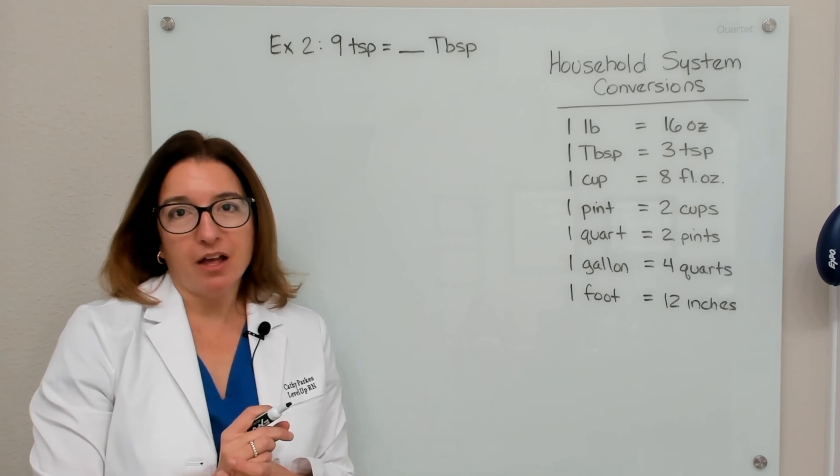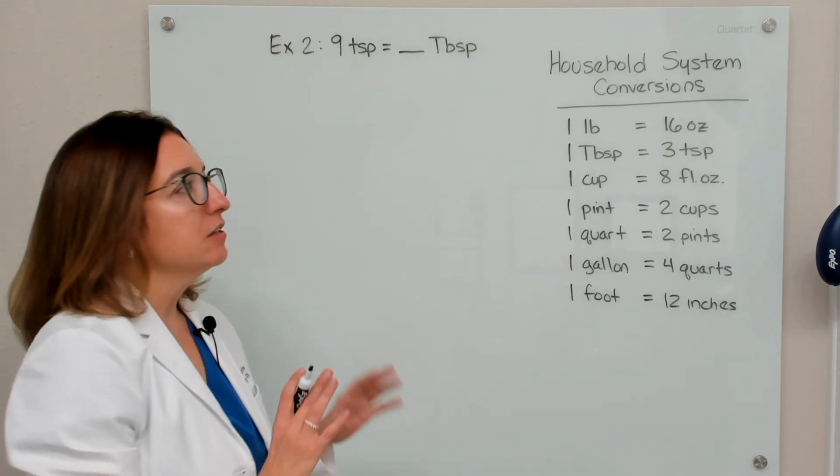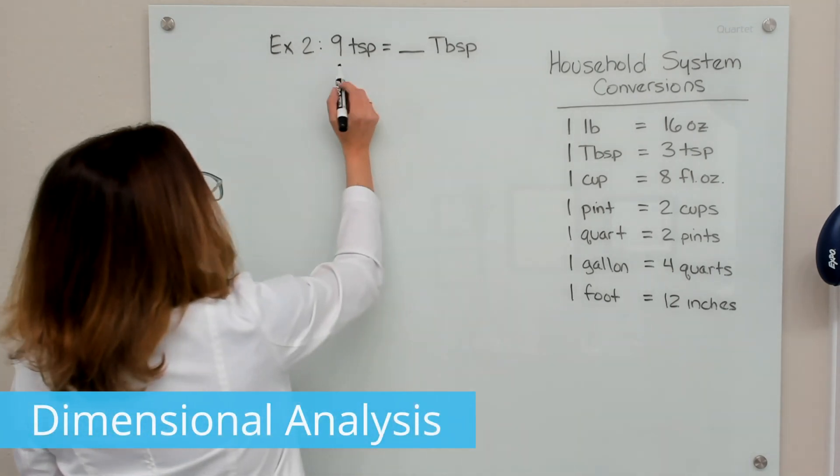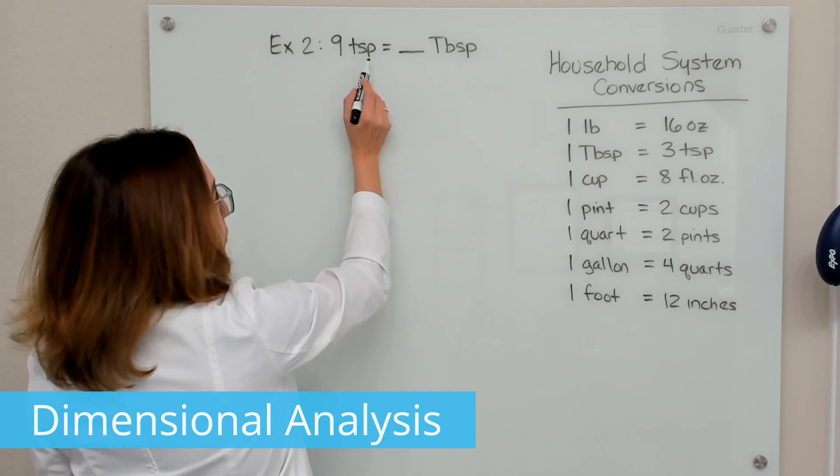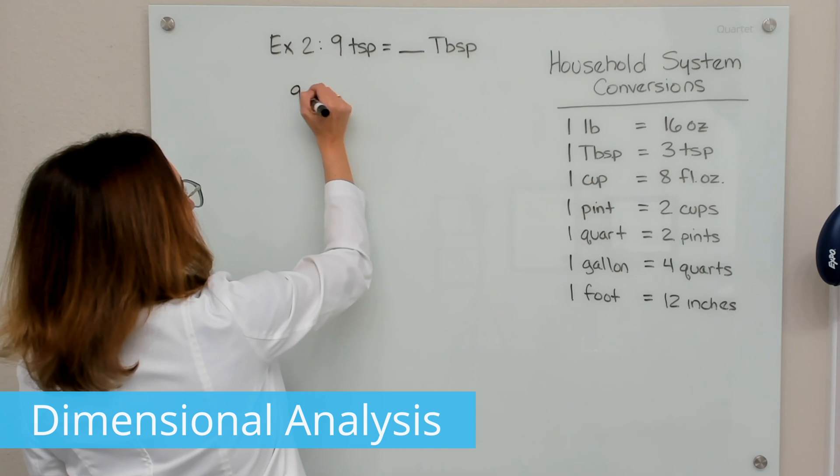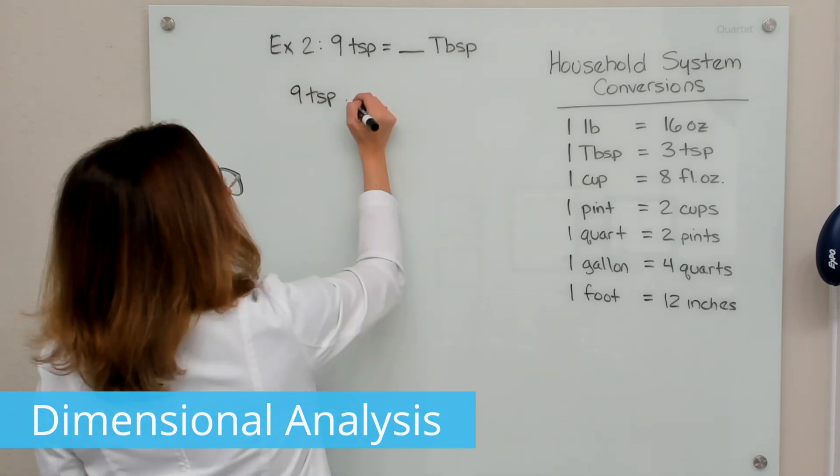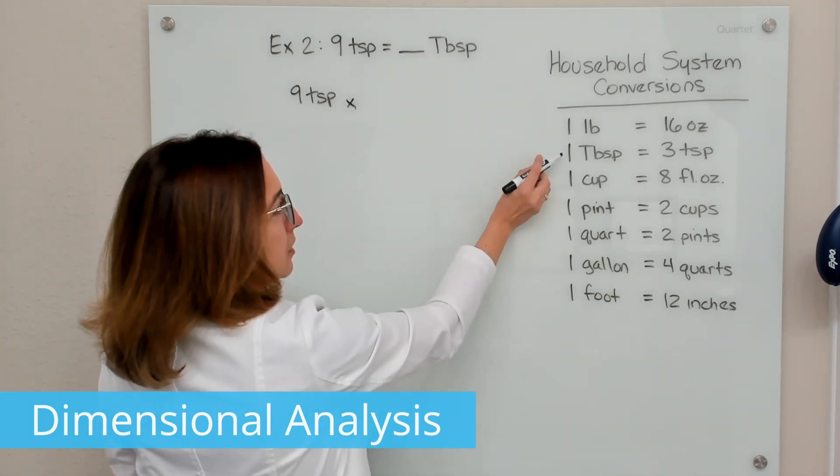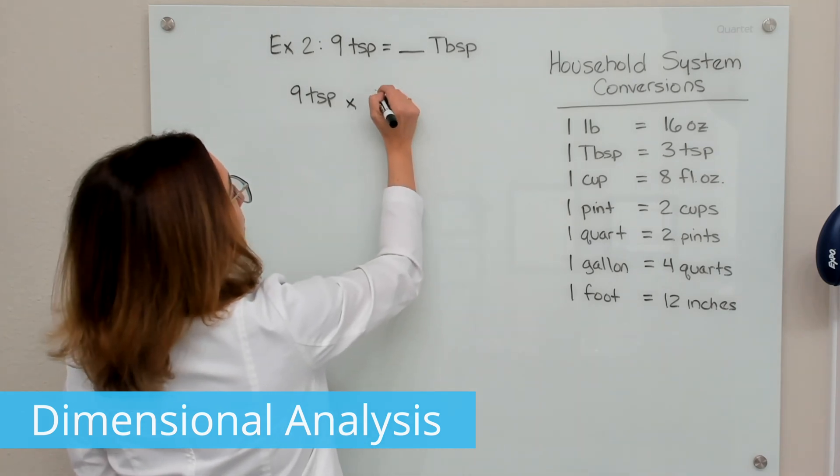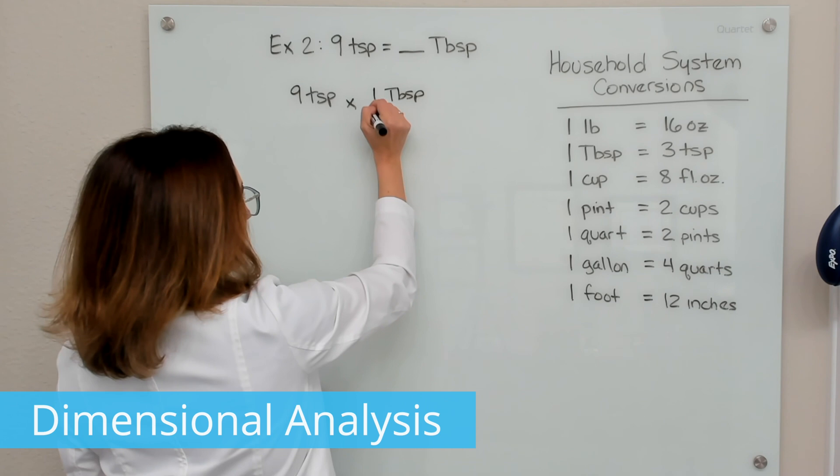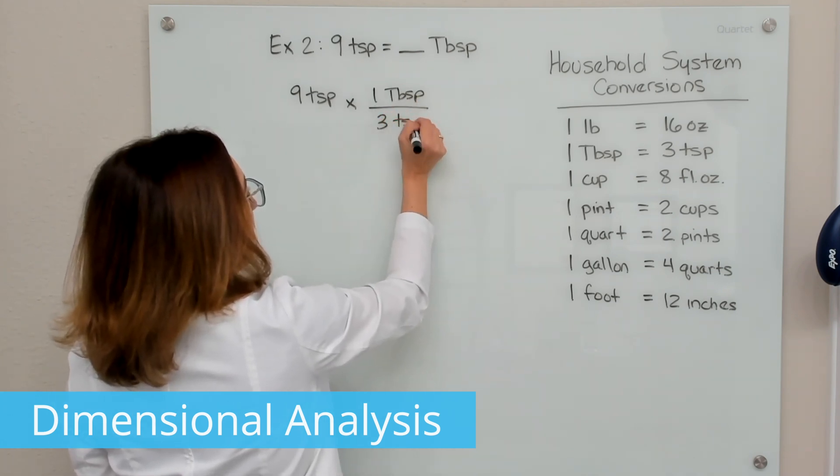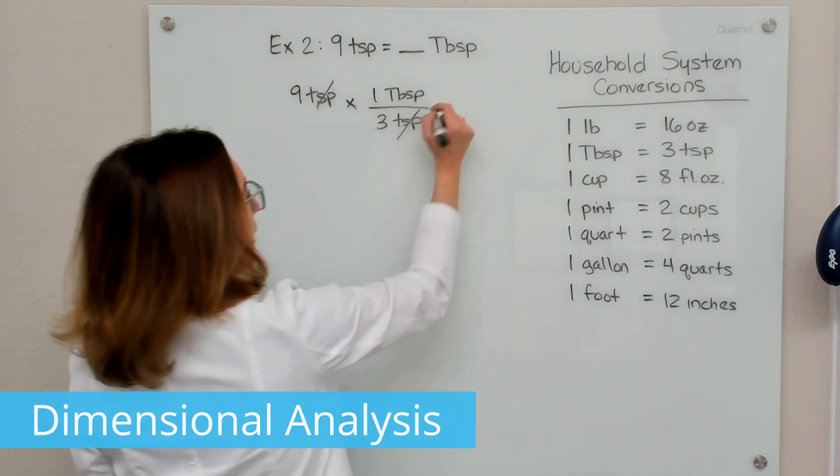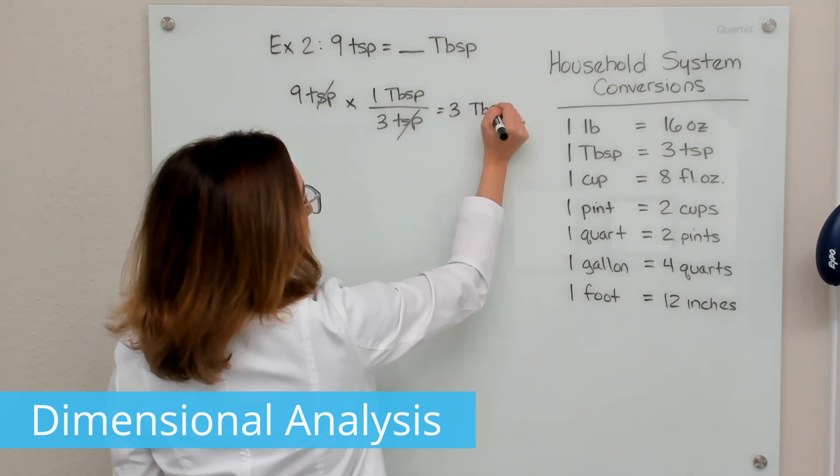Let's work through another example of converting within the household system. So we're going to do it using dimensional analysis and then ratio and proportion. So with this example problem, we want to convert 9 teaspoons into tablespoons. So we're going to write down the current units of measure, which is 9 teaspoons, multiply it times the appropriate conversion factor, which is going to be right here, right? One tablespoon equals three teaspoons. So I want to put my tablespoons on top because that's what I'm looking for and my teaspoons on bottom so that my units will cross off here. And then if I multiply this out, I end up with three tablespoons.